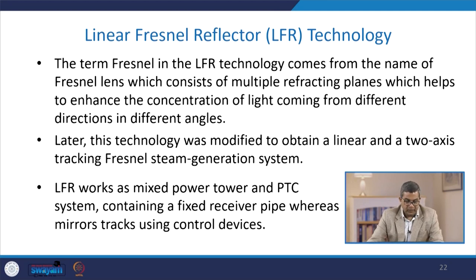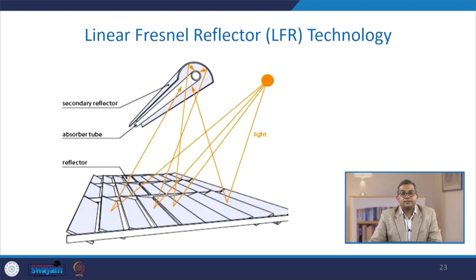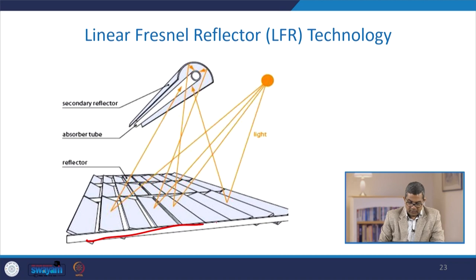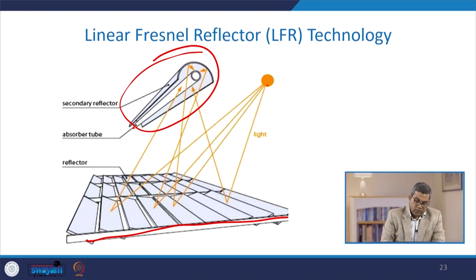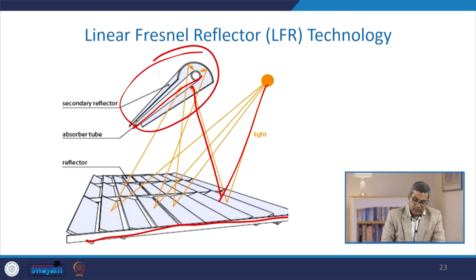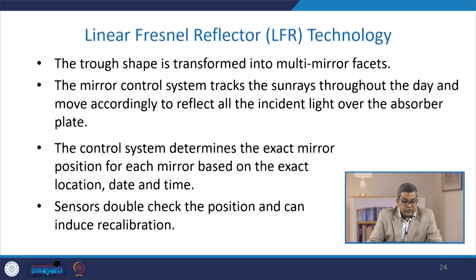The LFR works as a mixed power tower and PTC system containing a fixed receiver pipe, whereas the mirror tracks using control devices. In the LFR technology, we have the reflectors and secondary reflectors which comprise the absorber tubes. When light passes onto the first-hand reflectors, it goes to these secondary reflectors and the thermic fluid present there can absorb the solar energy. The flat surface is thus transformed into a multi-mirror facet.